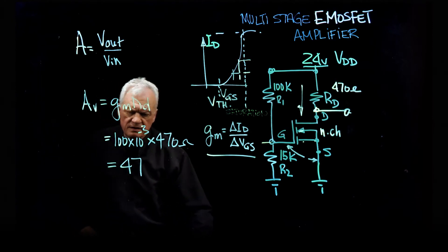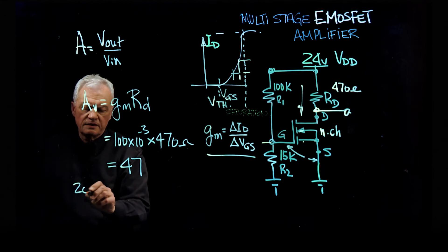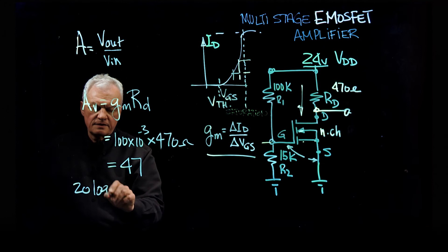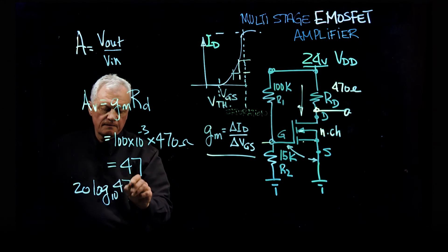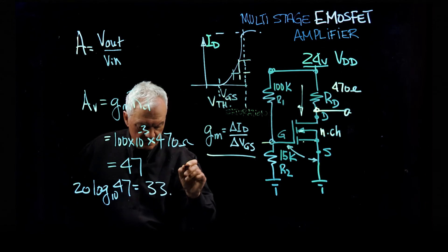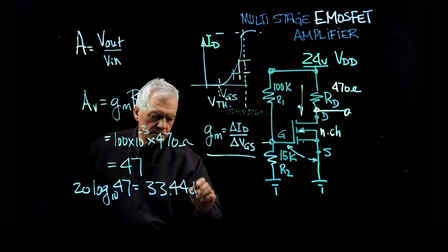but the thing is, I really want to know what is in dB, decibels. So we want to take this 47 and we come up with 33.44 decibels.